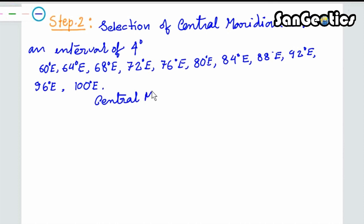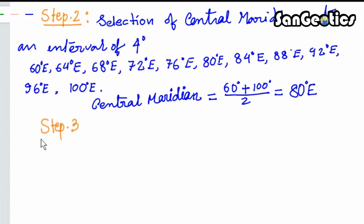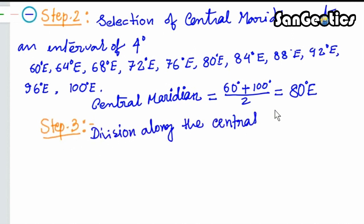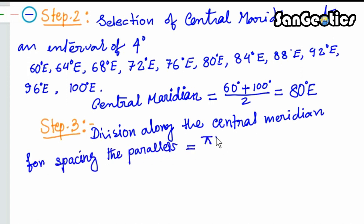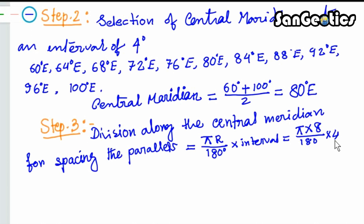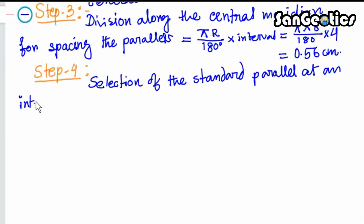The central meridian equals (60° + 100°) / 2 = 80° East. Step 3: Division along the central meridian for spacing the parallels equals (π × r) / 180° × interval = (π × 8) / 180° × 4° = 0.56 cm. Selection of standard parallels at an interval of 4 degrees.